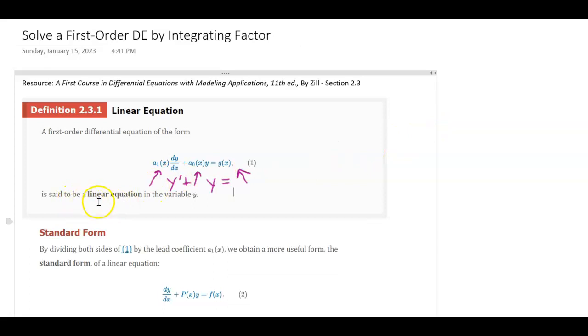We want to write this in standard form, meaning the leading coefficient in front of that first derivative is 1. So you're going to divide everything through by that a1 term, and then our big interest is going to be this p of x function in front of y.